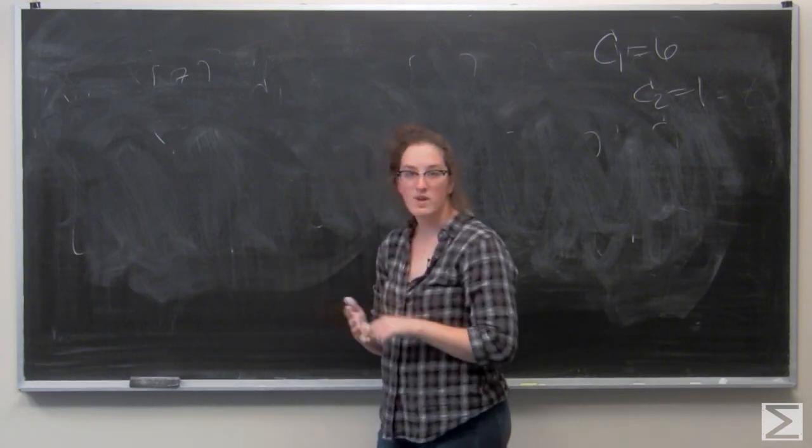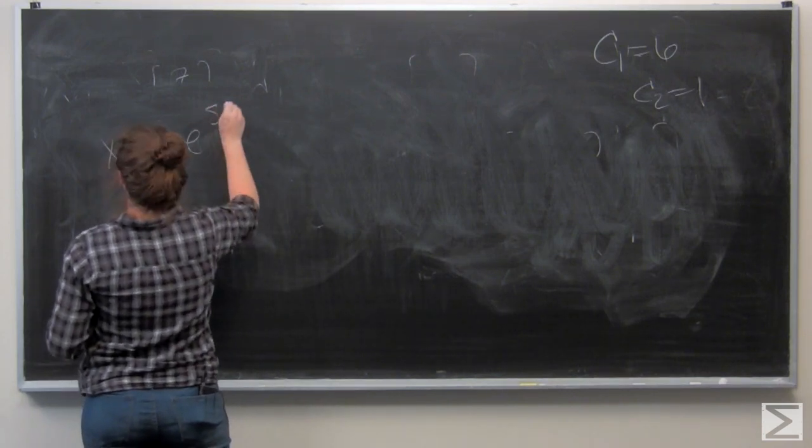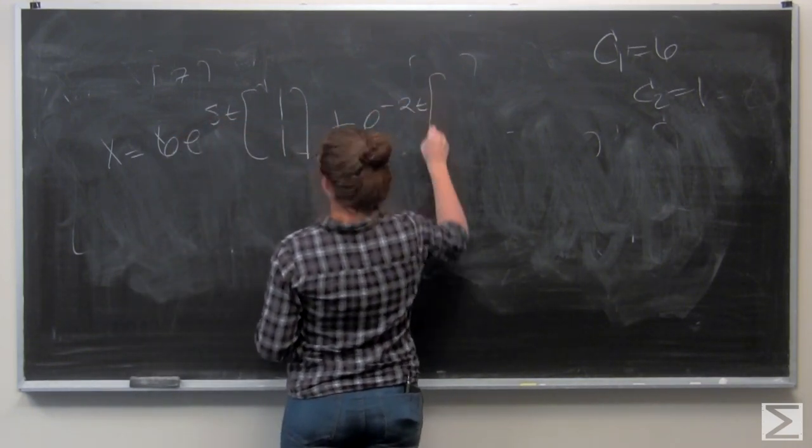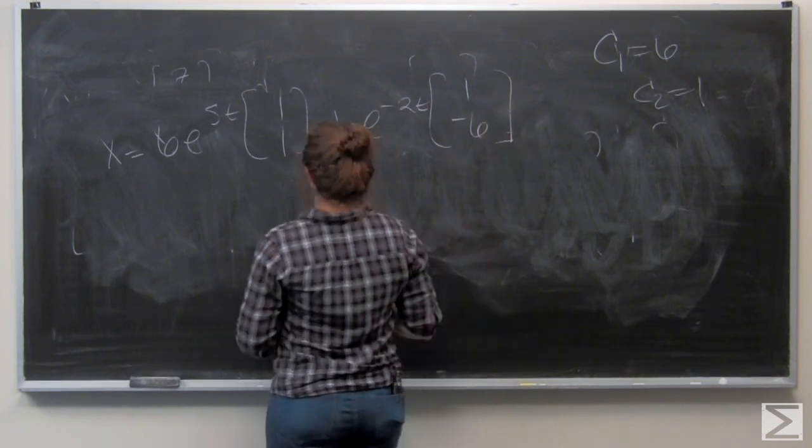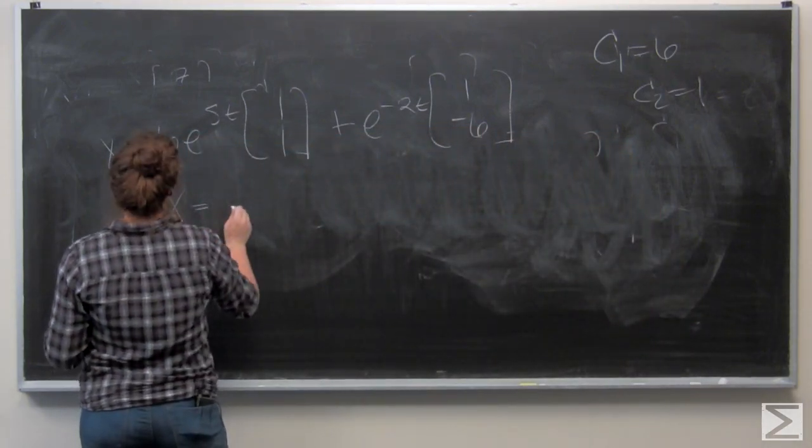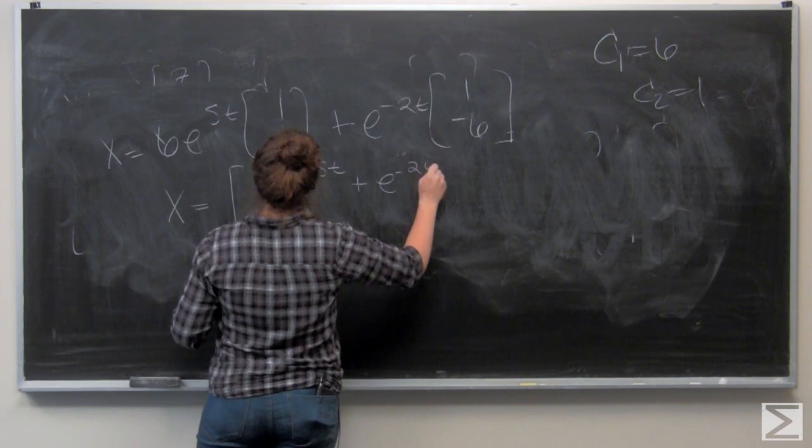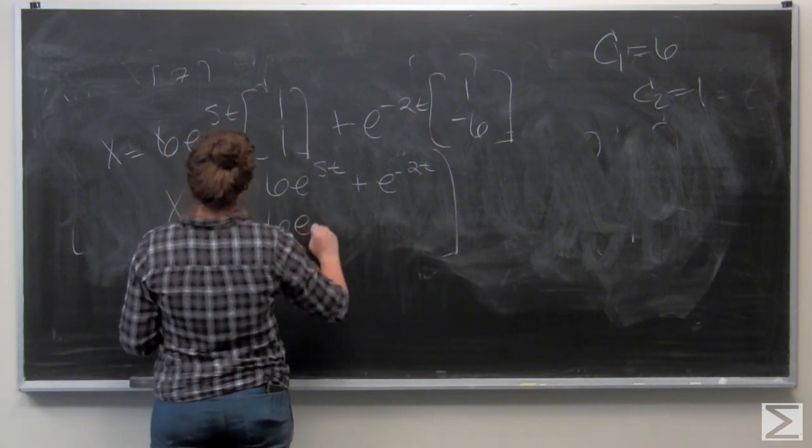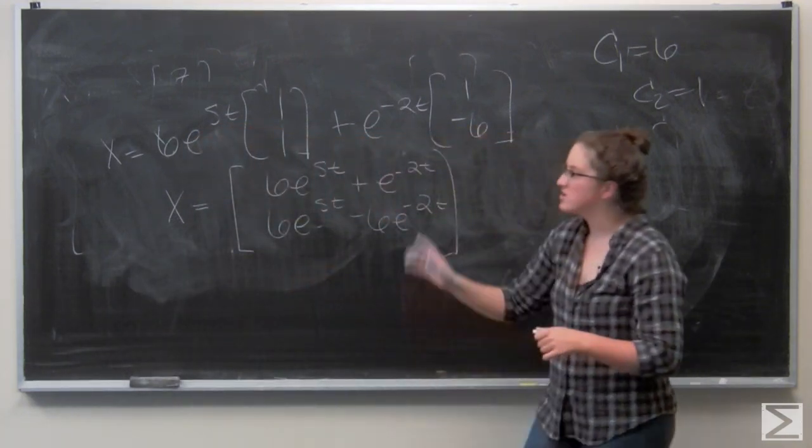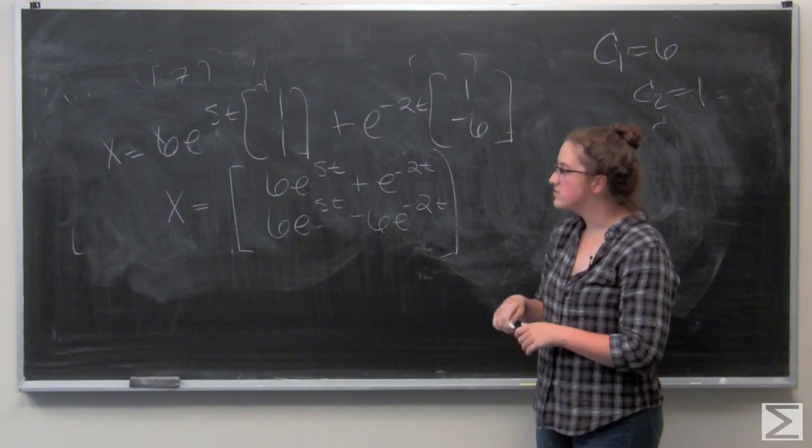So I can use this to write the solution x. And I'm just going to go ahead and combine everything into one matrix. So I am all set. I have actually done one better than finding the general solution. I have used the initial conditions to find our solution x. So we are all set. Thank you.